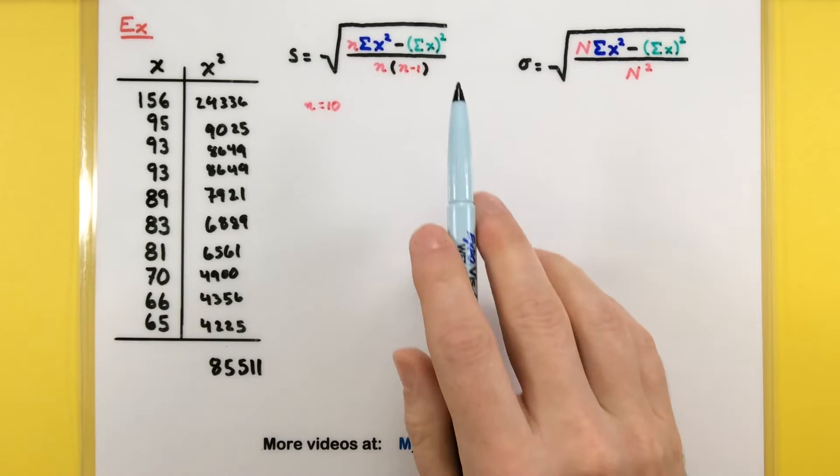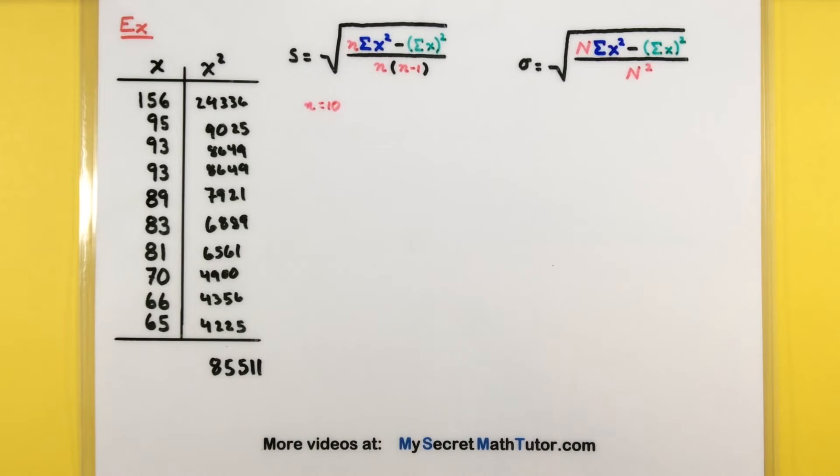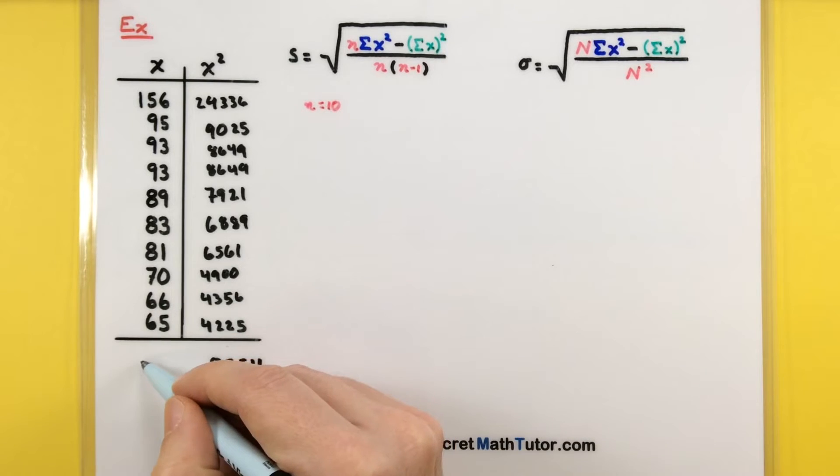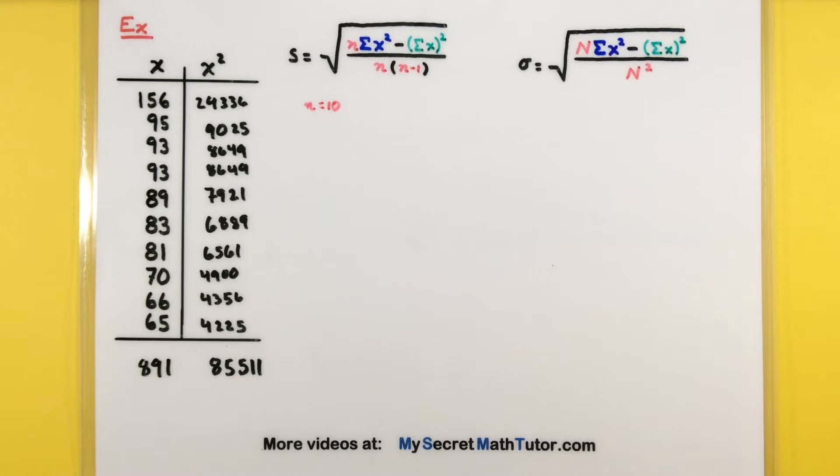Now, it's not the only sum we need to take. Over here, we also need to sum the regular x values and then square that sum. So, again, we'll need to add these and then square that result. Adding these ones up, we get 891. This needs to be squared. So, squaring 891, that would give us 793,881.